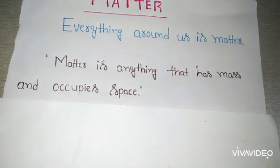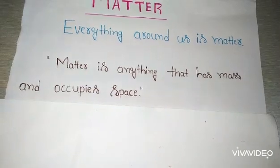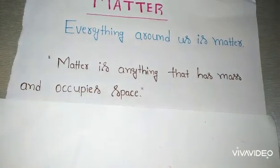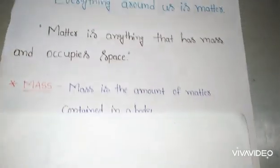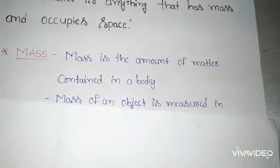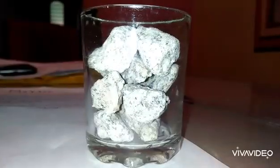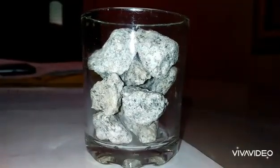Matter is anything that has mass and occupies space. Matter is anything that has mass. Mass means what? Mass is the amount of matter contained in a body. Matter is anything that has mass and occupies space.